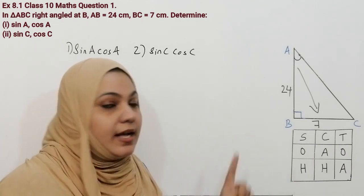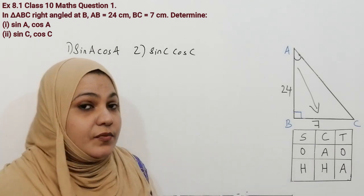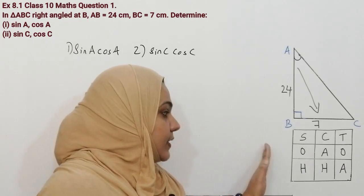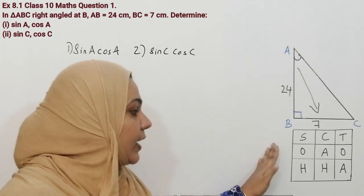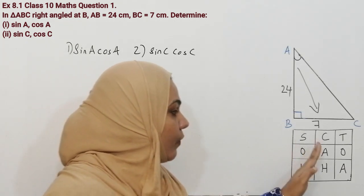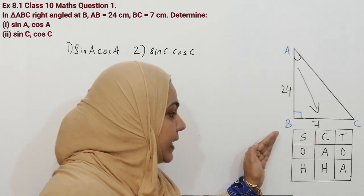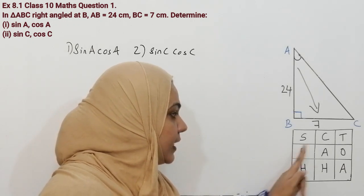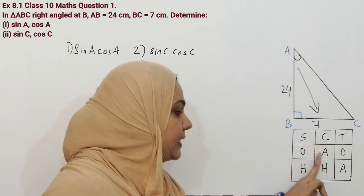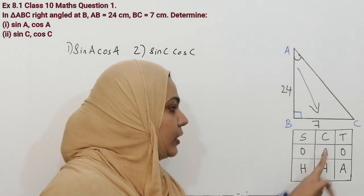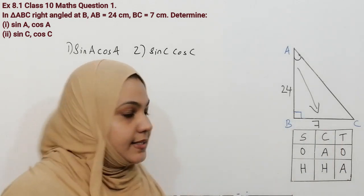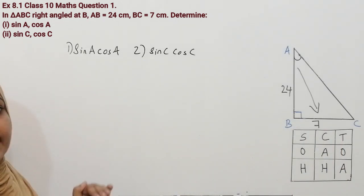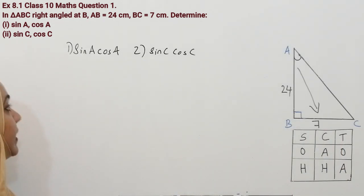Now I am using SOH-CAH-TOA. You can opt whichever one is easy for you. SOH-CAH-TOA means: S means sin — opposite over hypotenuse; cos — adjacent over hypotenuse; and tan — opposite over adjacent. In this question we need only sin and cos.